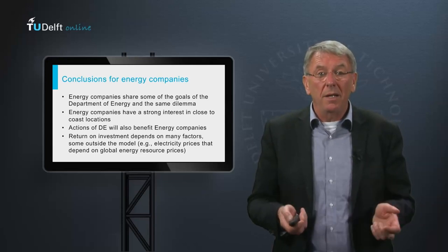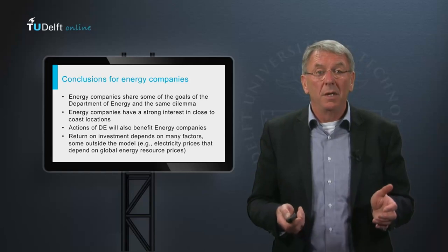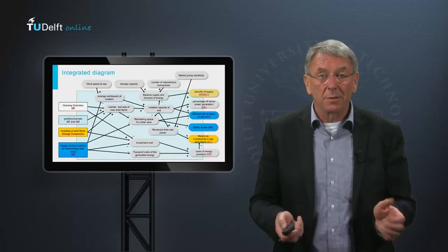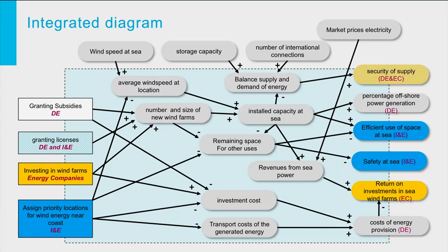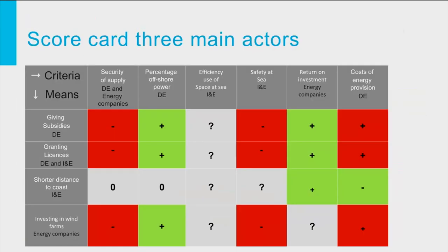As a next step, we combine the analyses for the two critical actors. The following integrated diagram includes all the relevant criteria and means of both the problem owner and the two critical actors in a single diagram. The coloring enables us to keep the distinction between the criteria and means of the different actors. The corresponding scorecard now includes all the means and criteria of the three actors considered. New elements in this scorecard are the cross impacts of energy company investments on efficiency of space use and safety at sea — these are uncertain and negative respectively.